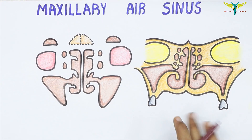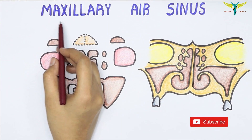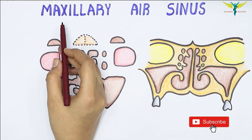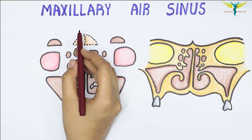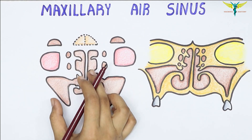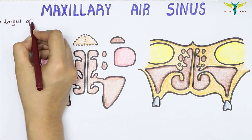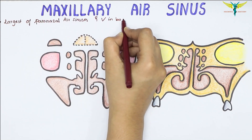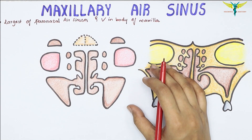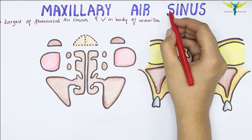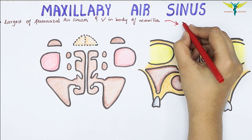In this video, let's learn about the maxillary air sinus. The maxillary air sinus is the largest of all the paranasal air sinuses and it is present in the body of the maxilla. The maxillary sinus drains into the hiatus semilunaris, that is the posterior part of the hiatus semilunaris.